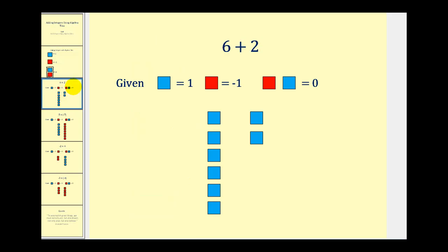Let's start with one that we already know how to do. Two plus six we know is equal to eight. But if we wanted to model this using algebra tiles, this would be the model for positive six. And so the sum would be a total of eight positive ones, or eight.